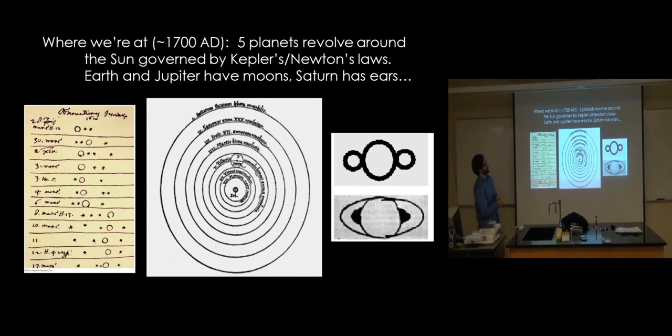Historically, we just basically picked all the really entertaining stories and people, even though they're all really important. And we made it from ancient Greece, kind of cherry-picking a little bit of history, to 1700-ish AD. And at that point, there are five planets. They revolve around the sun. Everybody basically agrees with that in the literate world.